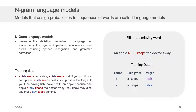Let's look at the right-hand side and assume we were asked to fill in a missing word in the sentence: 'An apple, a blank, keeps the doctor away.' Let's also assume we were given the training data shown on the bottom left: 'A fish keeps for a day.' 'A fish keeps well if you put it in a cold place.' 'A fish keeps best if you put it in the fridge.' 'You'll be having a fish.' 'Have it with an apple because one apple a day keeps a doctor away.' 'They also say a day keeps coming.' One way to solve for the missing value is to look at the training data and say, whenever I saw 'a keeps,' what kinds of words in the skip-gram sense — so 'a blank keeps' — what was the blank? I've got some of the words highlighted there in purple, and that's the word 'fish.'